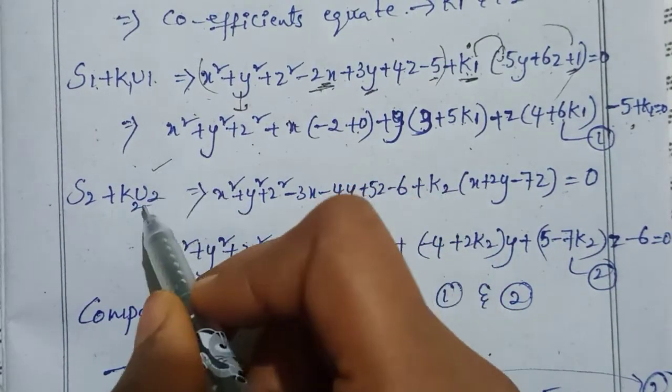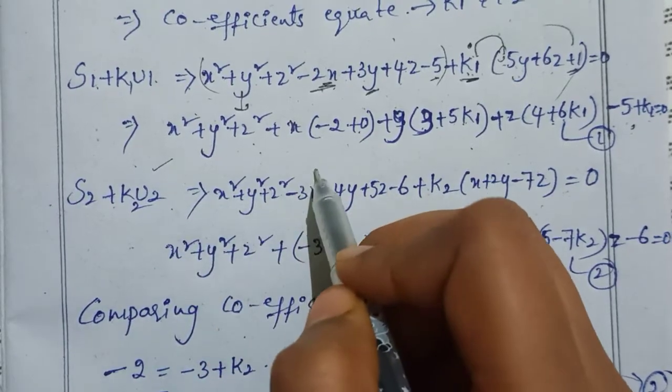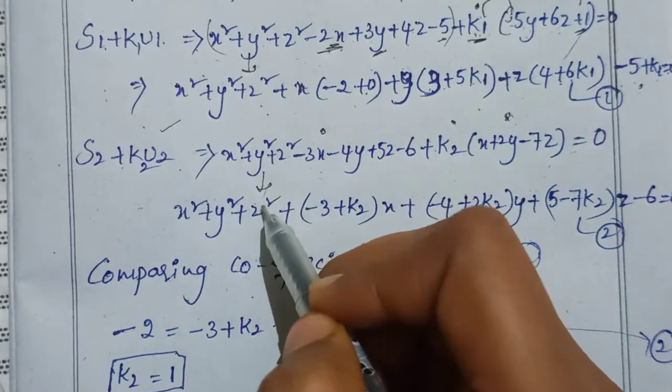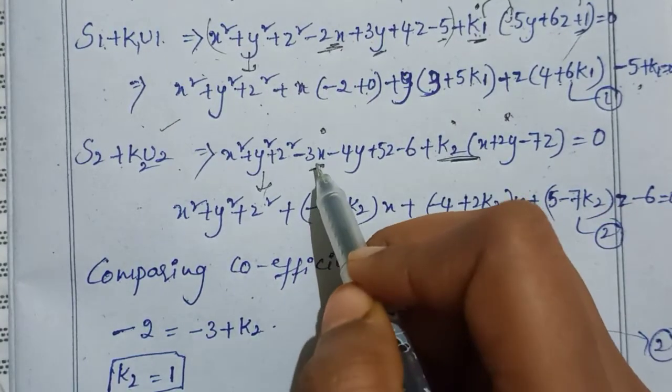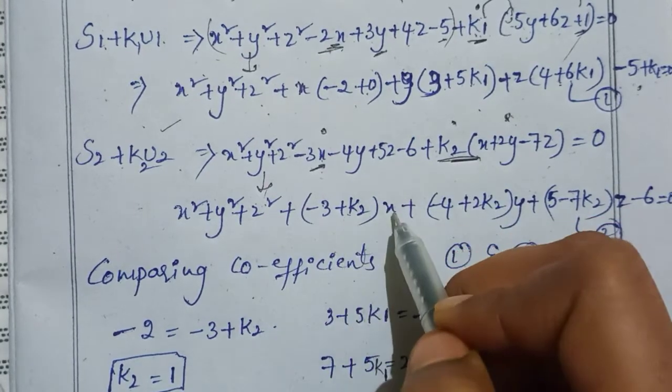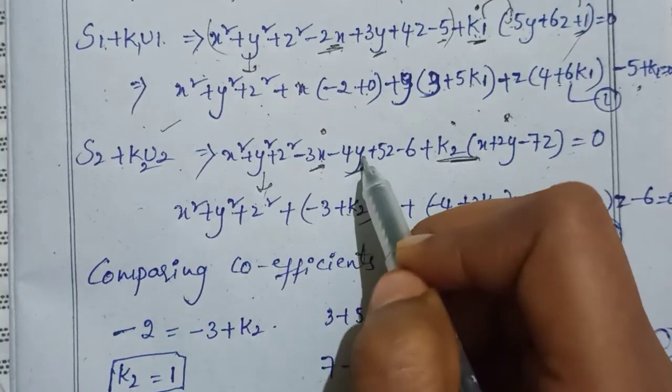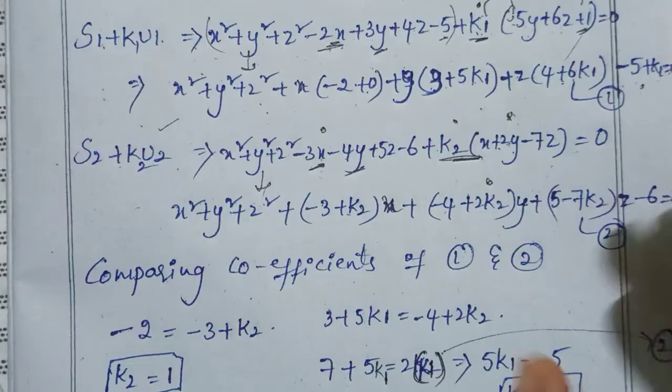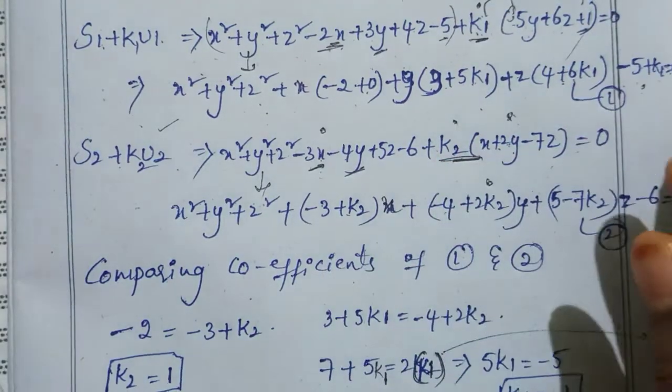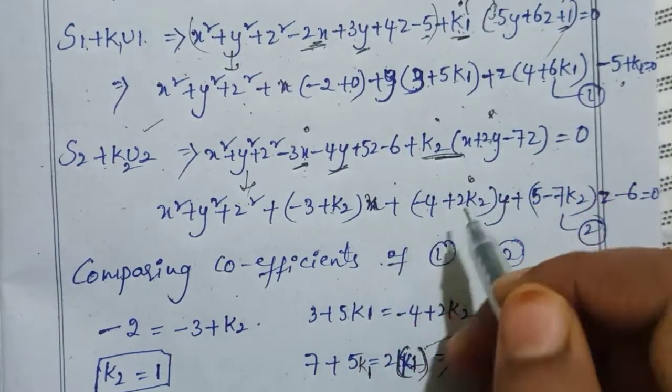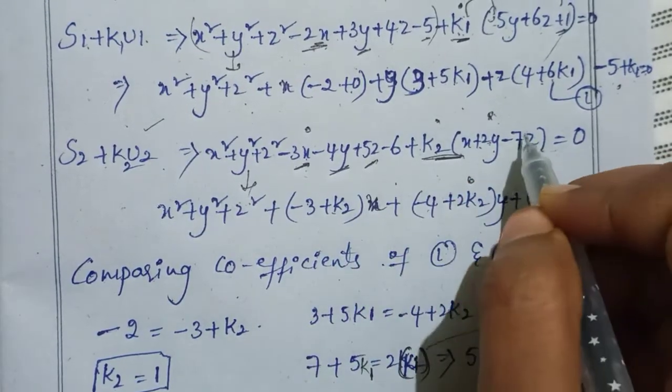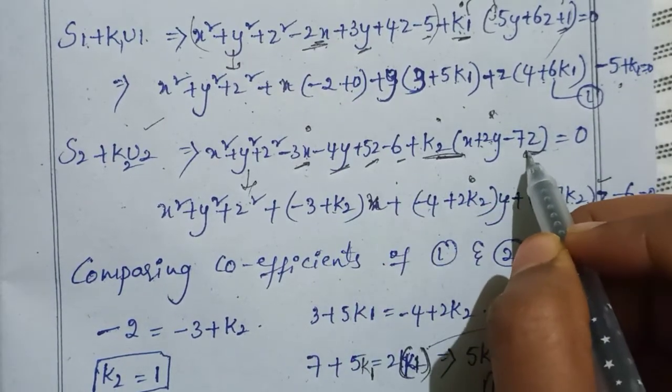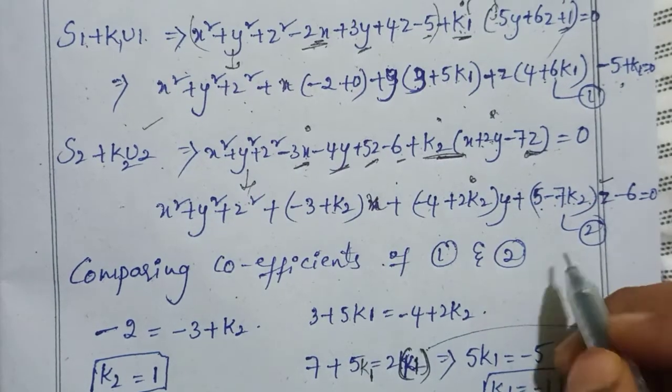Same way, the second sphere equation S2+K2U2=0. Opening brackets: x coefficient is -3+K2, y coefficient is -4+2K2, z coefficient is 5-7K2, and constant is -6. This is equation number 2.